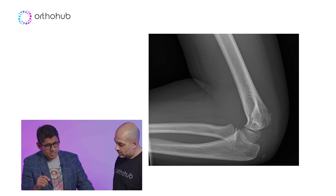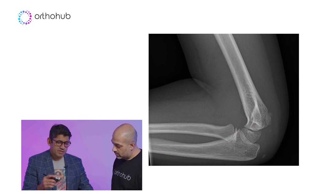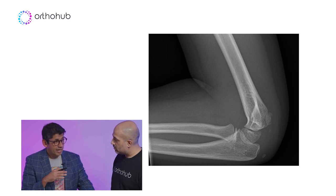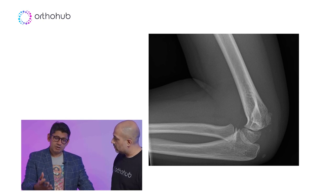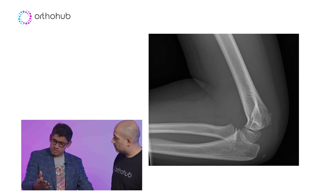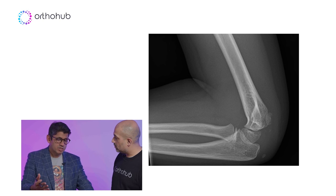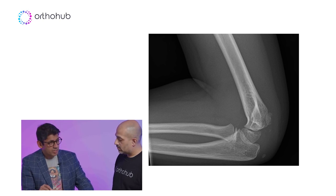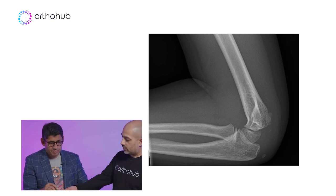If you've seen a kid in A&E and you think there's an elbow problem, and A&E say they've done an X-ray from wrist up to the humerus - don't accept that. Make sure you get an elbow-centred view.